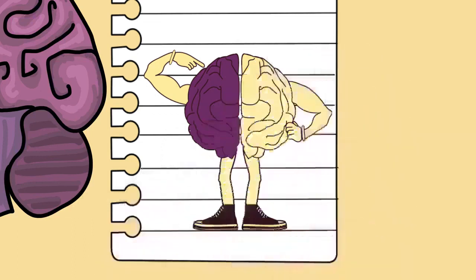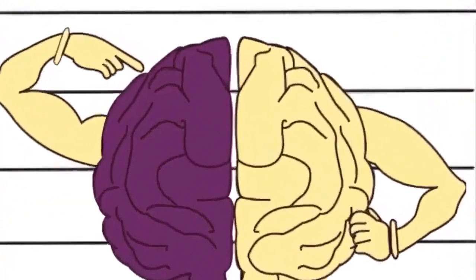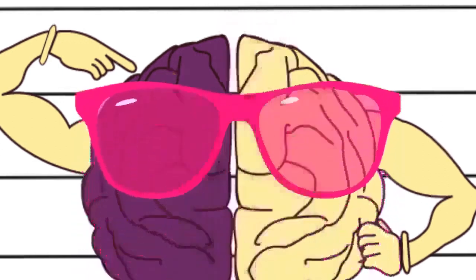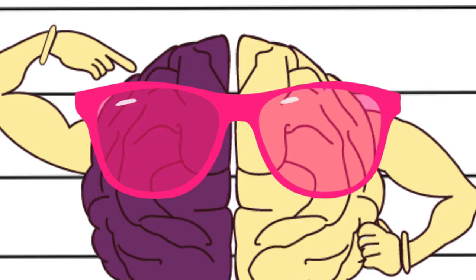Some basic types of responsiveness such as reflexes can be mediated by the spinal cord or peripheral ganglia, but sophisticated purposeful control of behavior based on complex sensory input requires the information integrating capabilities of a centralized brain.